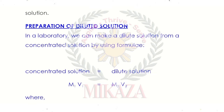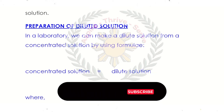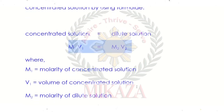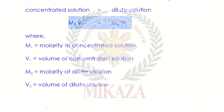Dilute solutions are very important in the laboratory. Mathematically, we use this method to dilute a concentrated solution, i.e., M1V1 = M2V2. In this formula, M1 is the molarity of the concentrated solution, V1 is its volume. M2 is the molarity of the dilute solution and V2 is the volume of the dilute solution.